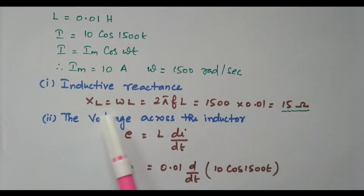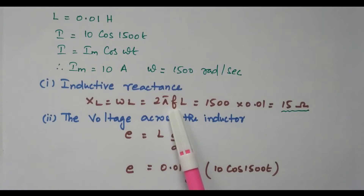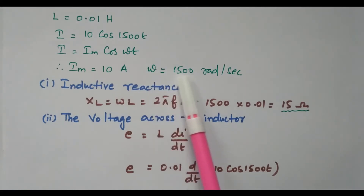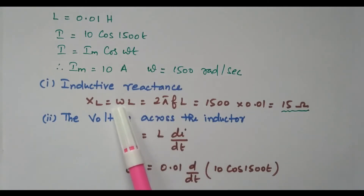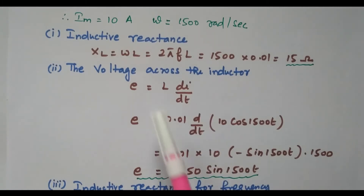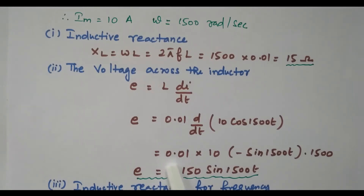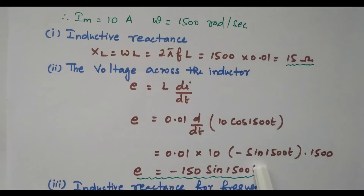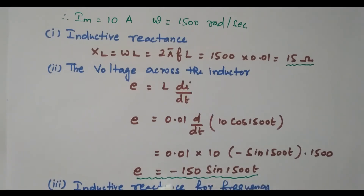Inductive reactance: XL = ωL = 1500 × 0.01 = 15 ohms. For the voltage across the inductor, e = L × di/dt = 0.01 × d/dt[10 cos(1500t)] = 0.01 × 10 × (−sin(1500t)) × 1500. Multiplying all quantities: 0.01 × 10 × 1500 = −150 sin(1500t). So the voltage equation is e = −150 sin(1500t).